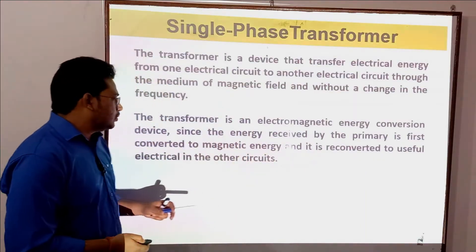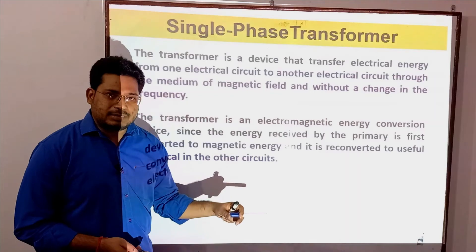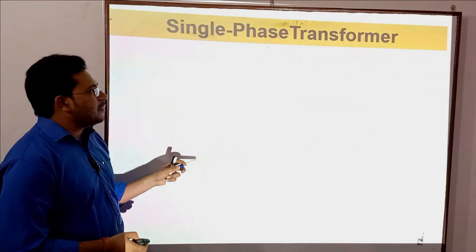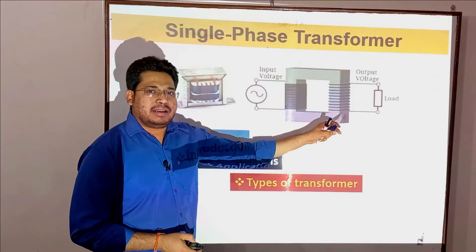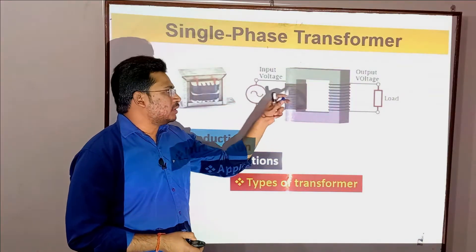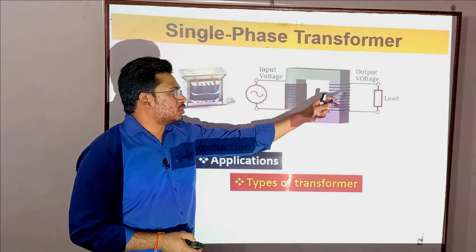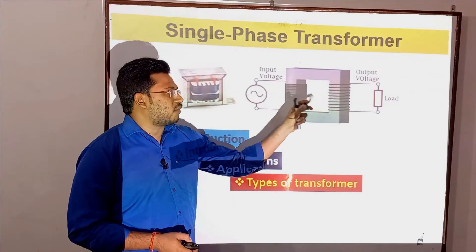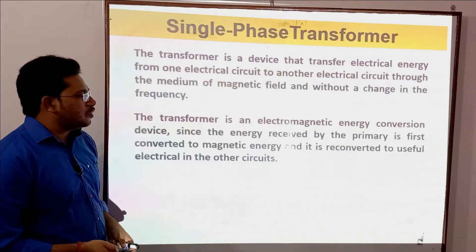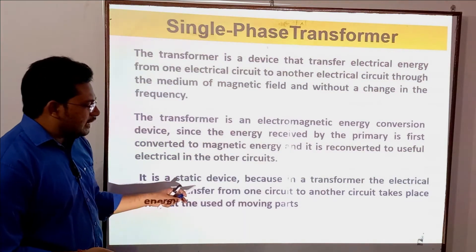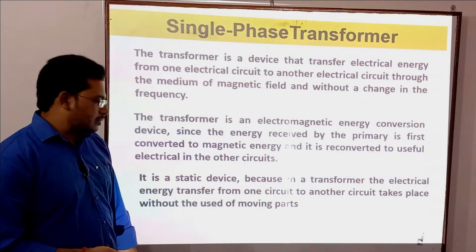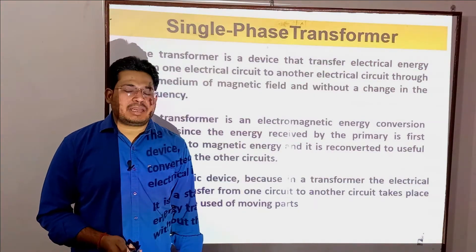The basic construction and operating principle: there is a primary winding and a secondary winding. When supply is given, flux is induced. Due to self-induction in the primary coil, mutual induction occurs in the secondary coil, and through mutual induction, EMF is generated. A transformer is a static device — there is no moving part, no rotor — so it is simply called a static device.